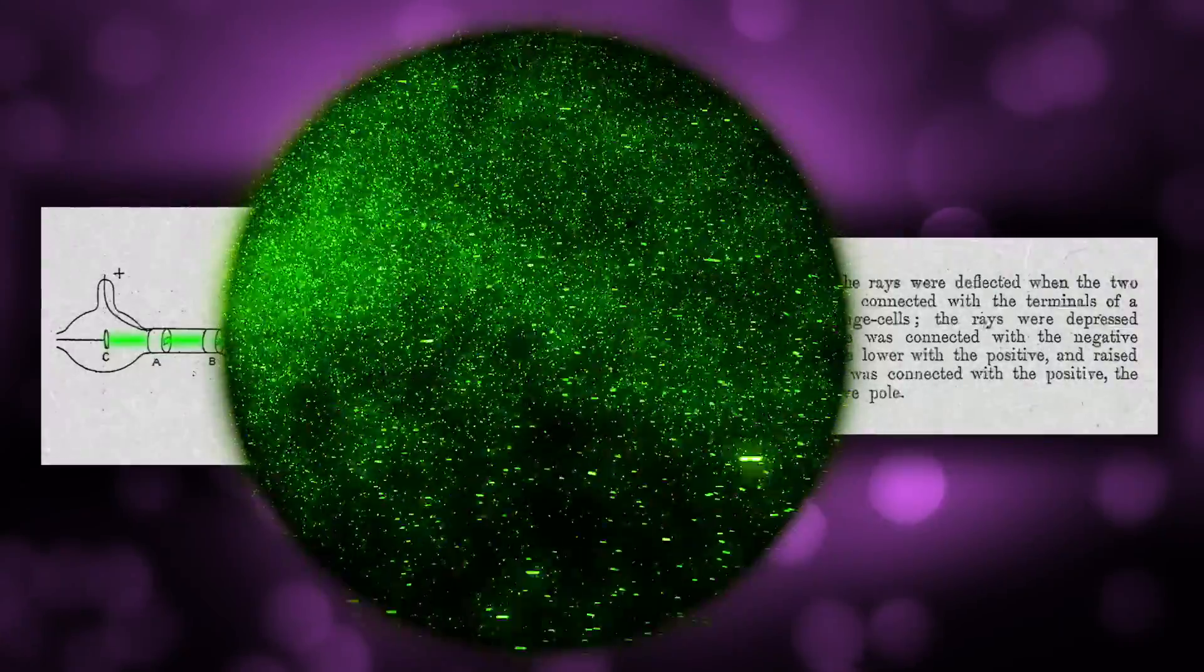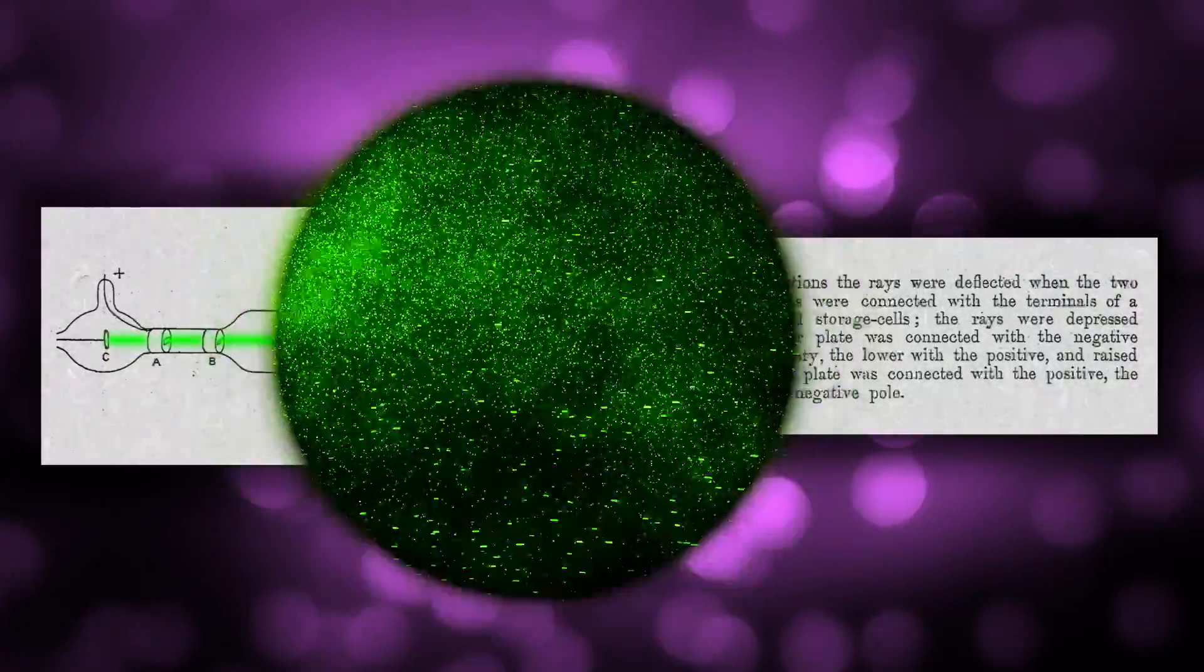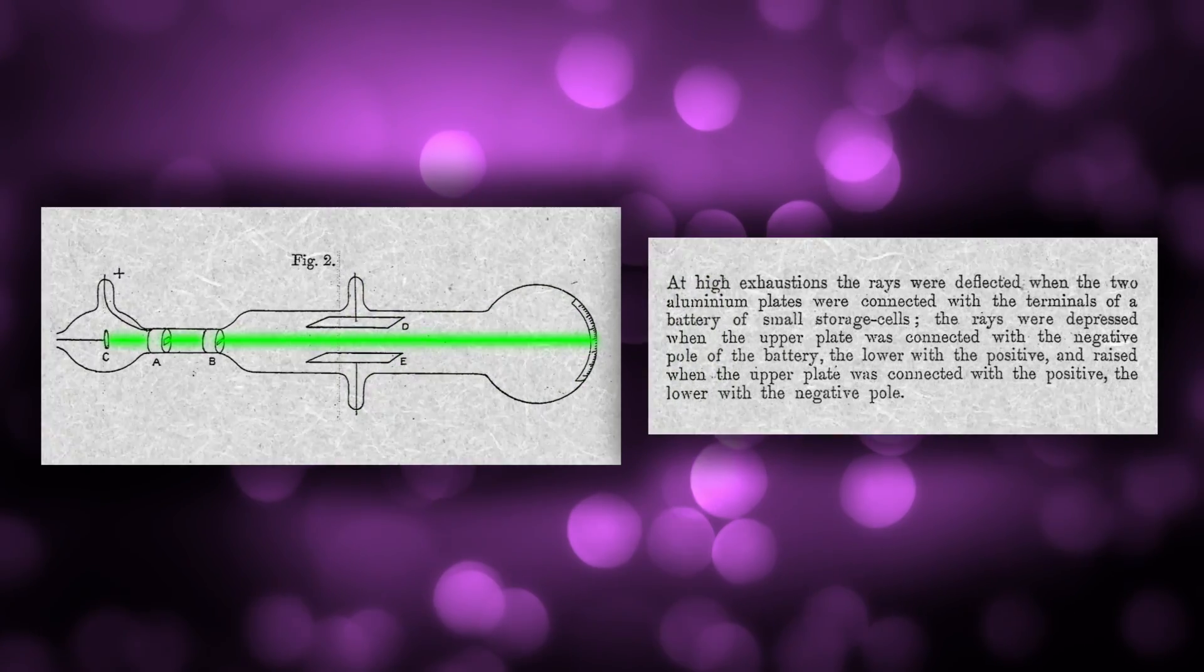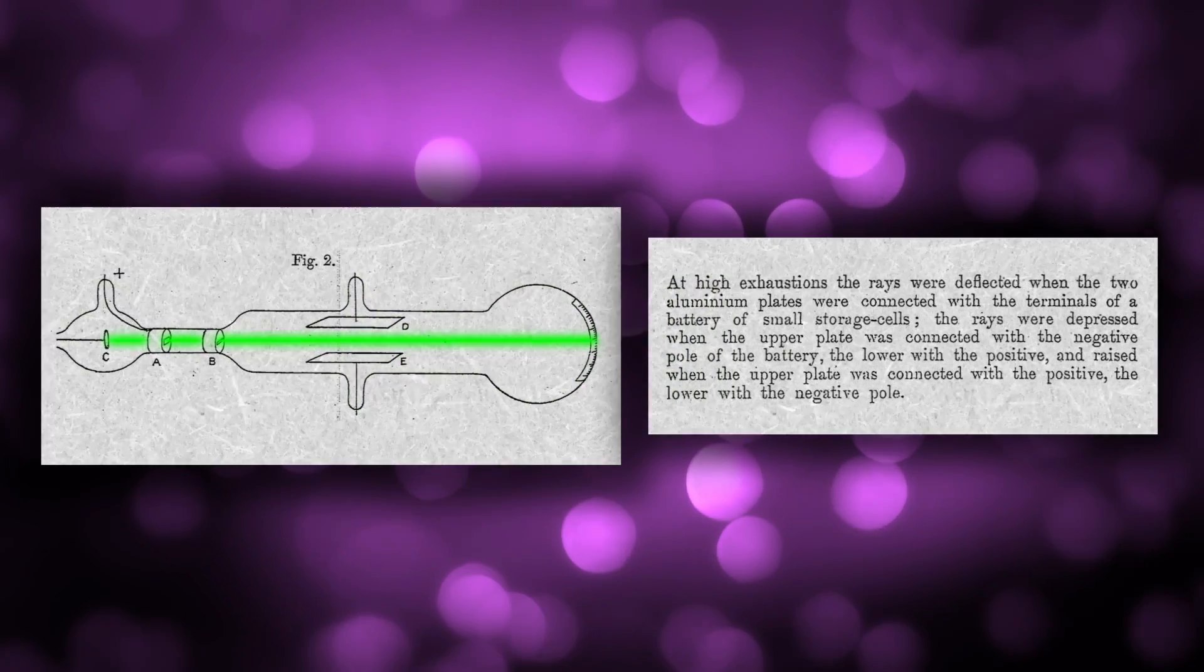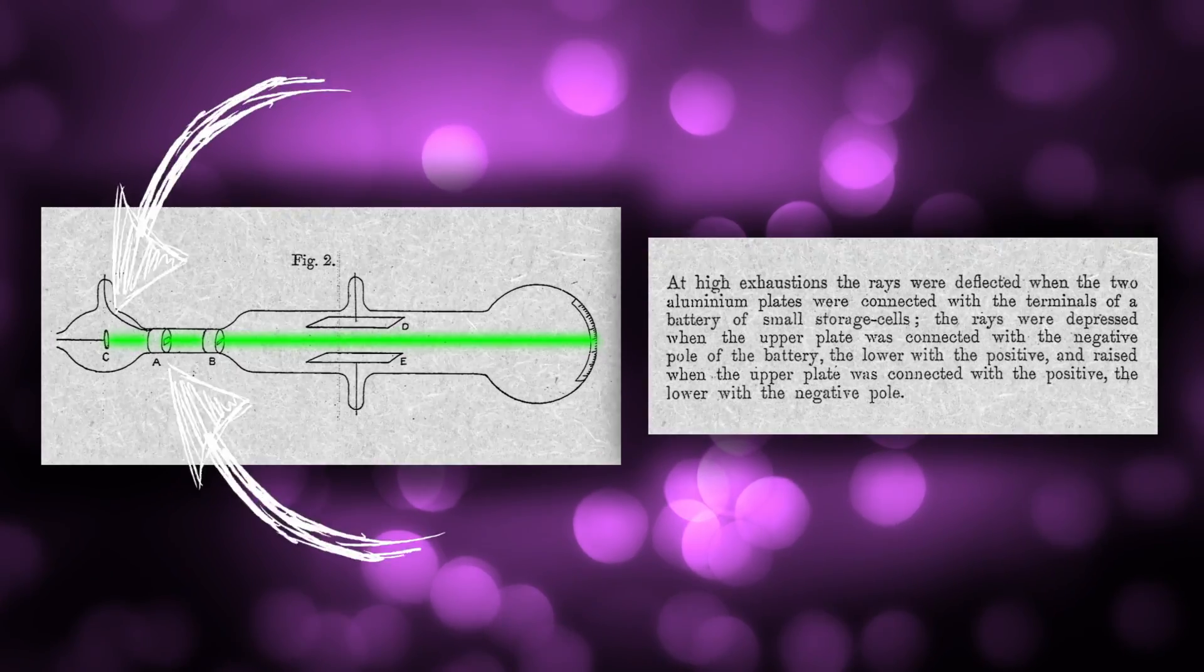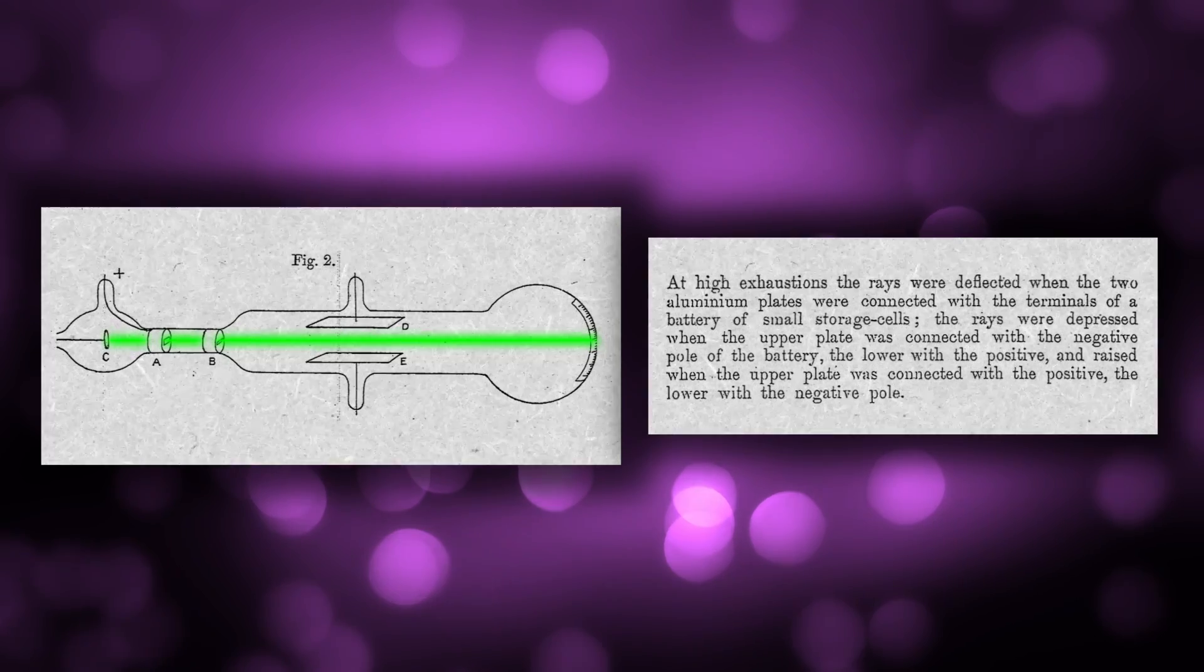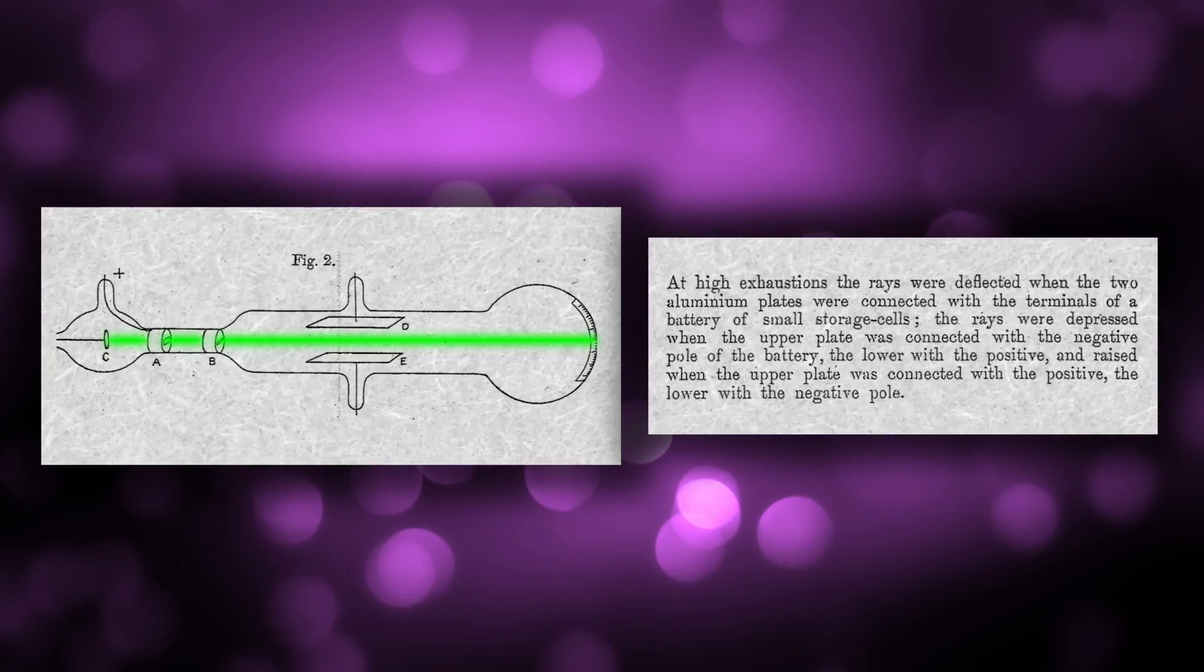And because the cathode rays were attracted to the positive electrode, it meant that the particles must be negatively charged. He also demonstrated that the deflection of cathode rays was exactly the same even if there were different gases present in the tube or if different materials were used for the electrodes. This suggested that the negatively charged particles were identical in all these different substances.